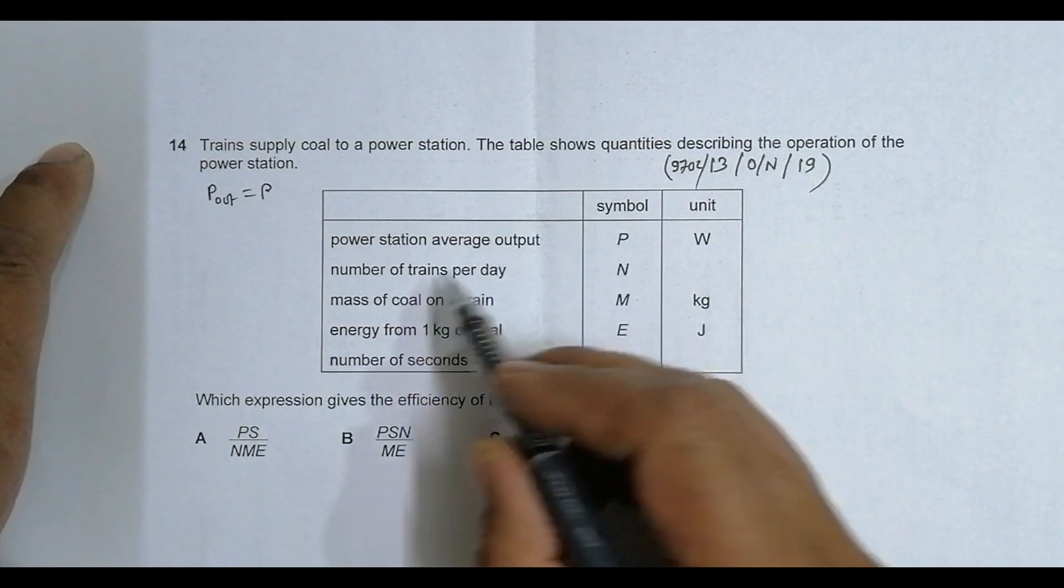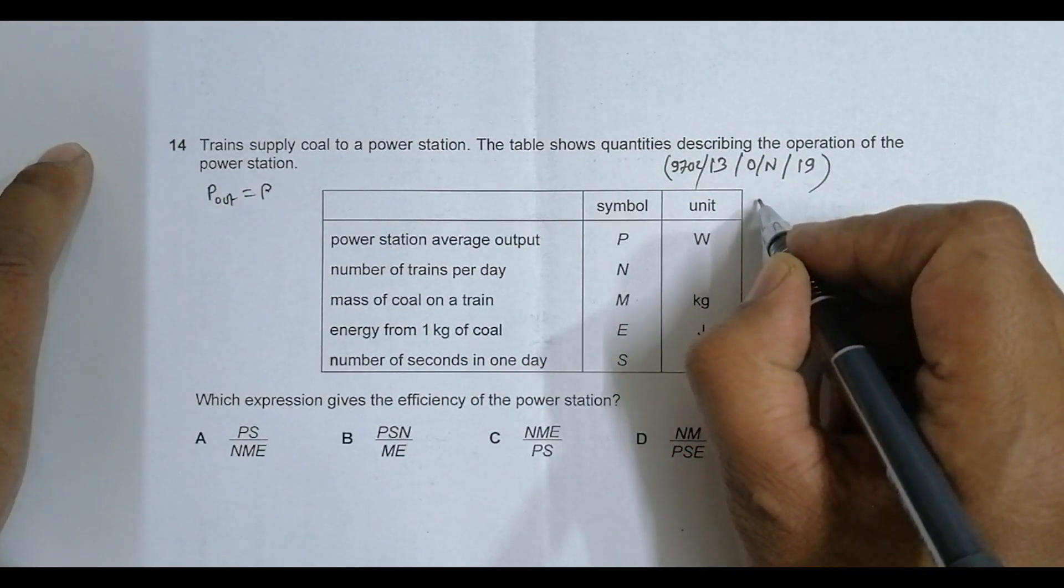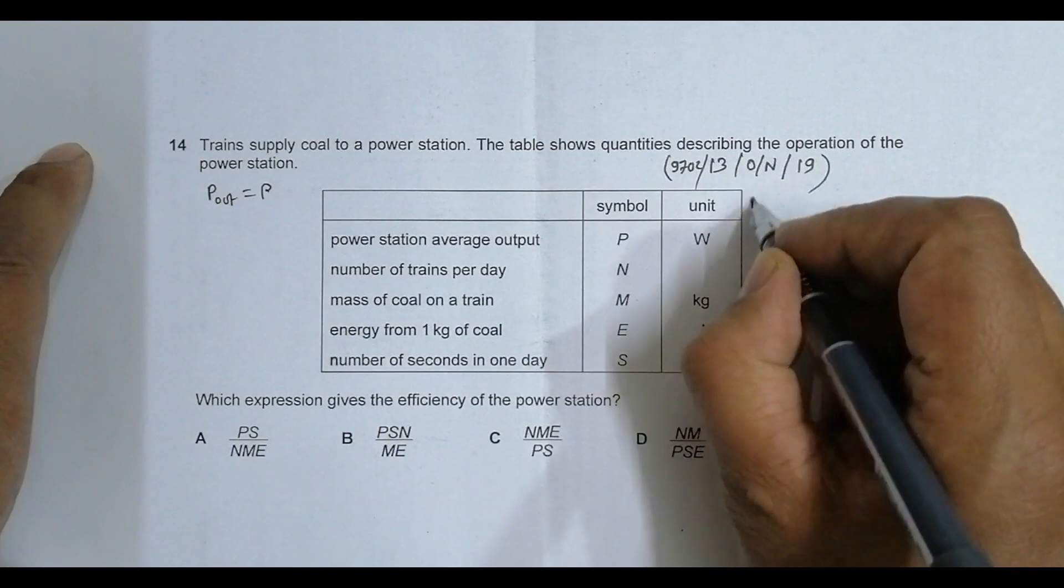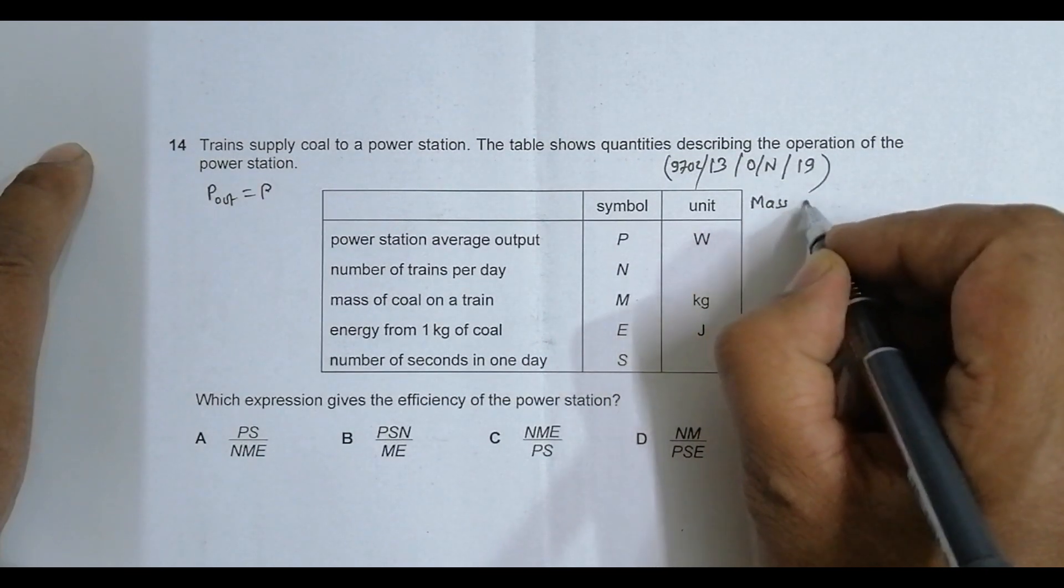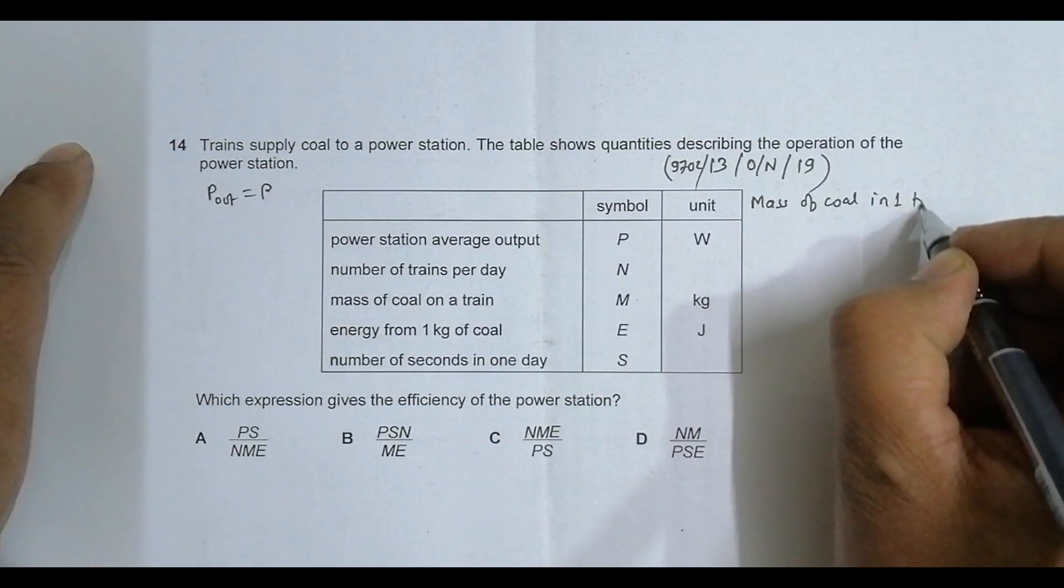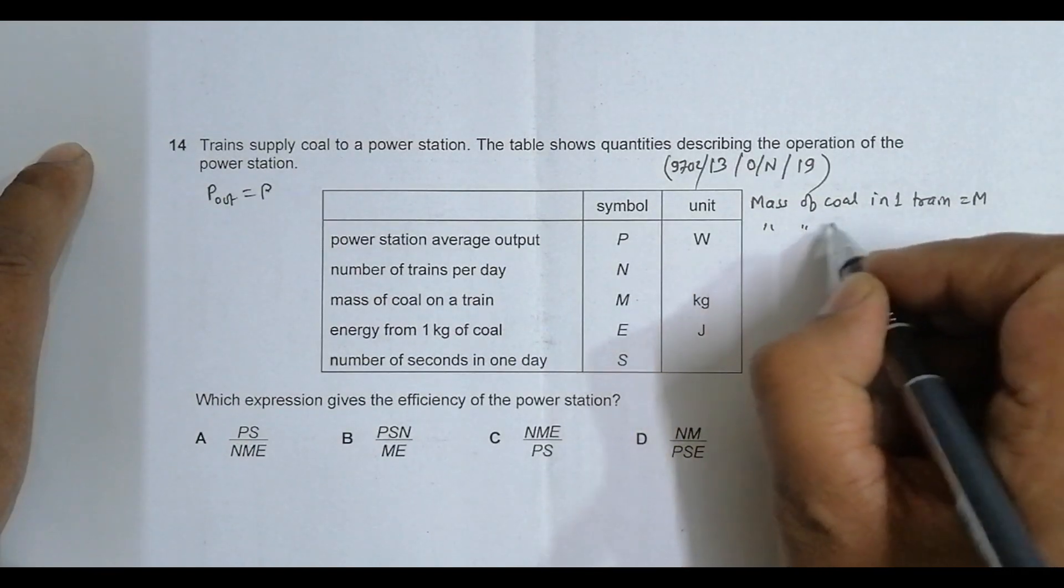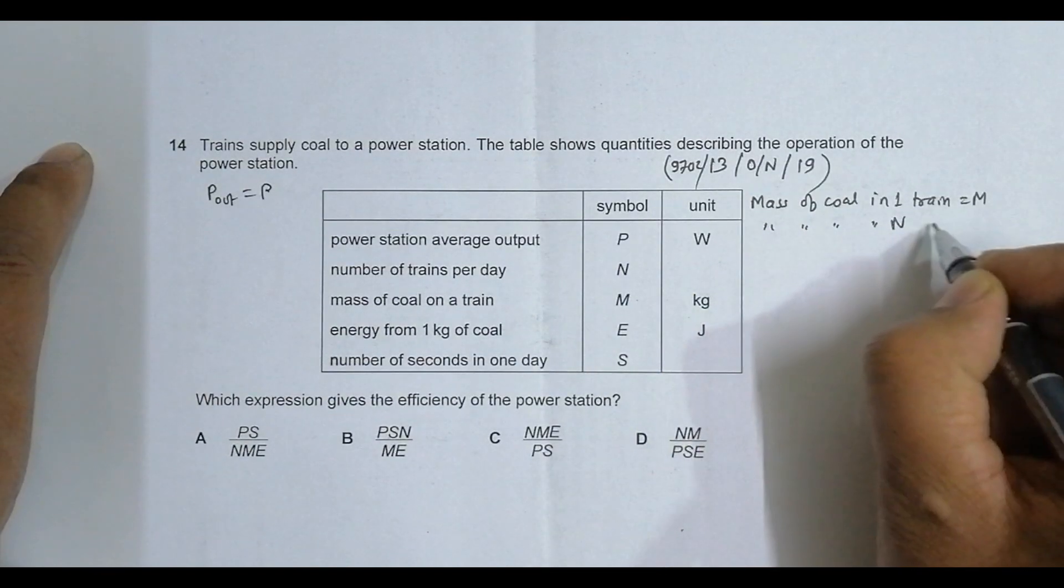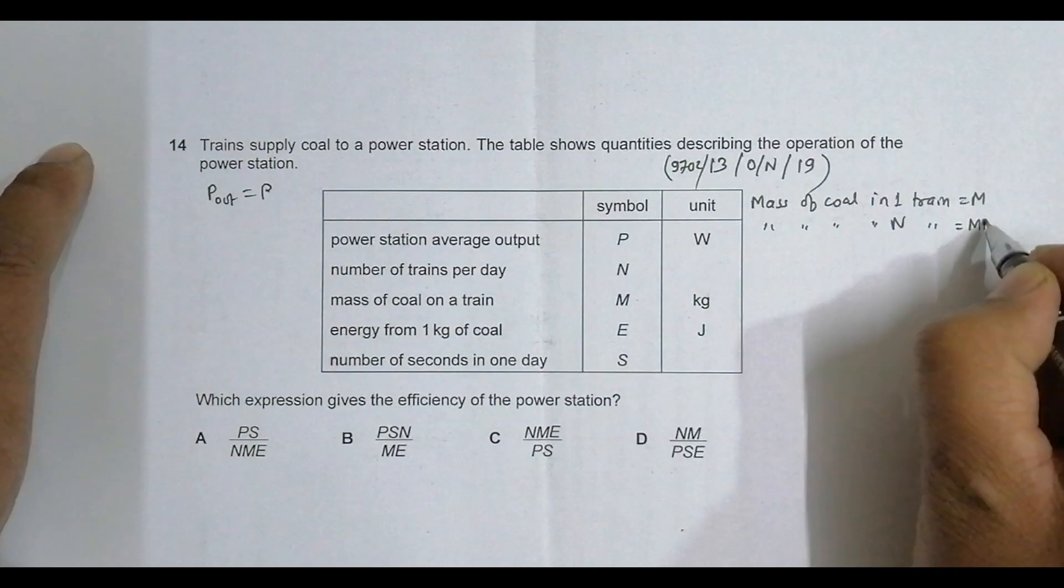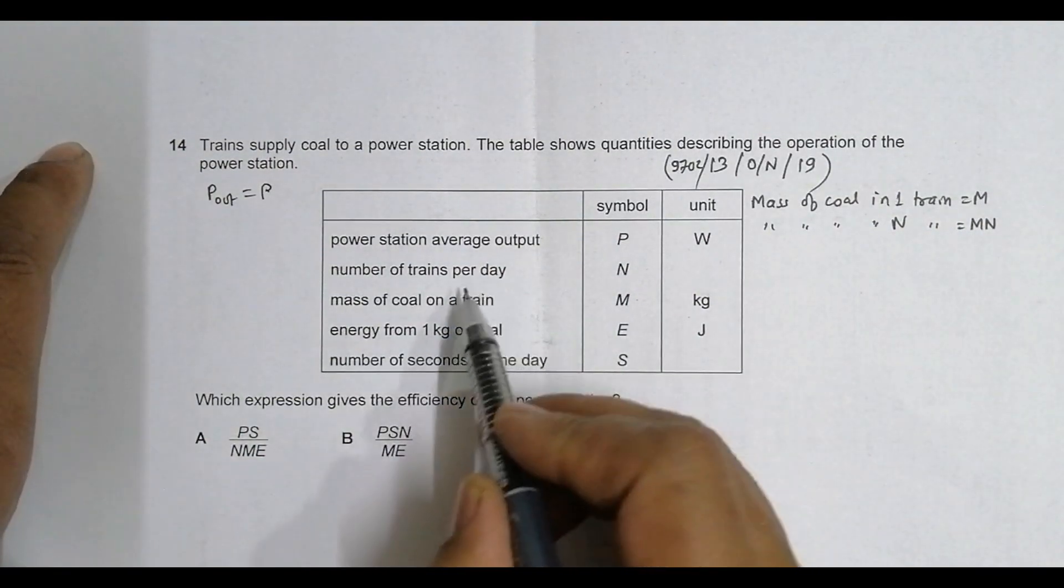The first thing to consider is mass of coal in one train equals M. So mass of coal in N trains is M times N. Let us remember that it occurs in one day.